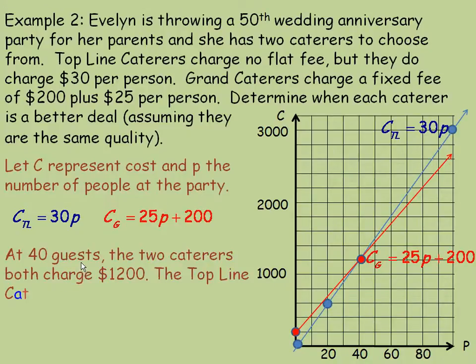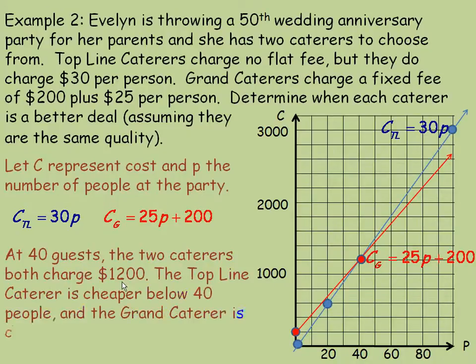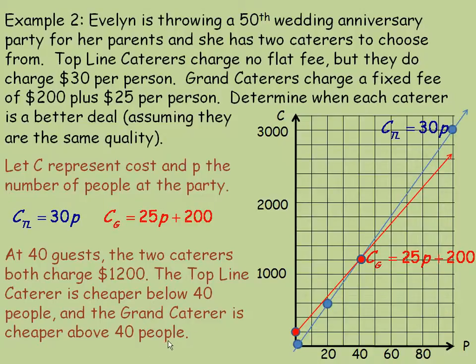At 40 guests, both caterers charge $1200. The Top Line Caterer is cheaper below 40 people, and the Grand Caterer is cheaper above 40 people.